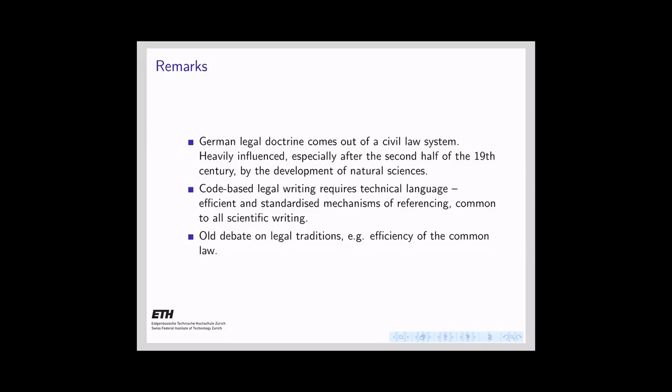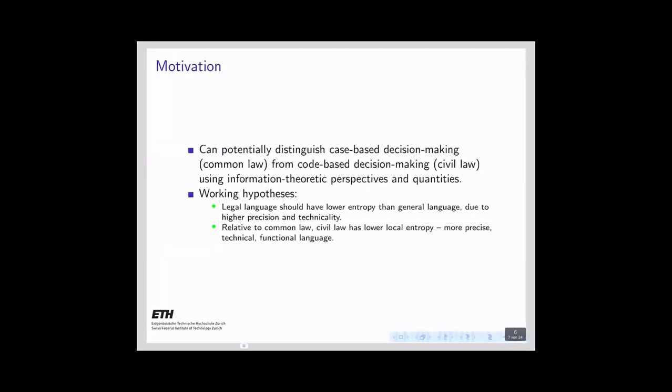The German legal doctrine comes from a civil law system, heavily influenced after the second half of the 19th century by the development of natural sciences. Code-based legal writing requires technical language and efficient, standardized mechanisms of referencing common to all scientific writing. There is also debate on the efficiency of the common law system. Our working hypotheses are that legal language should have lower entropy than general language due to higher precision and technicality, and that relative to common law, civil law has lower local entropy — it is more precise, technical, and functional.